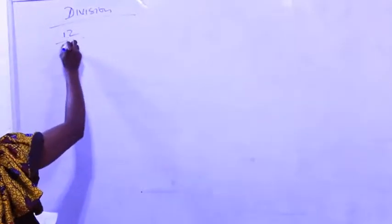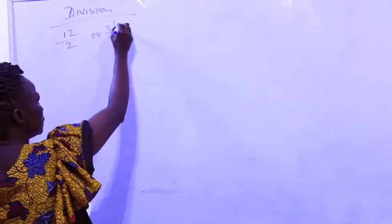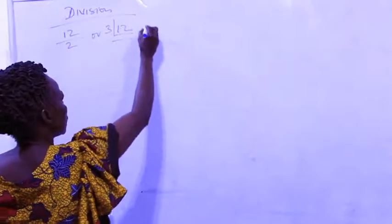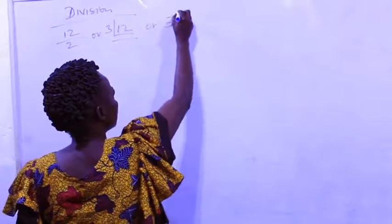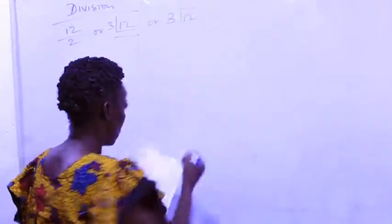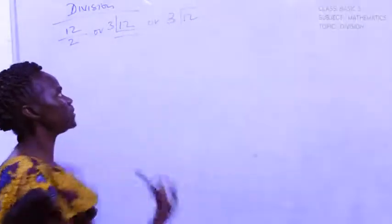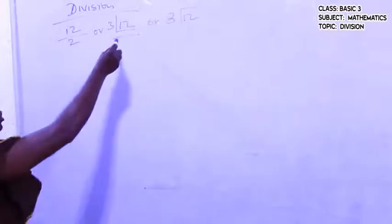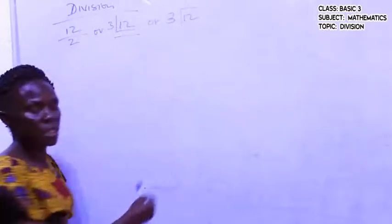Take example, 12 divided by 3. We normally use this one in long division. Children, we are going to use this one or this one. Even this one is possible.